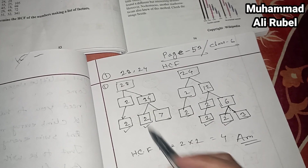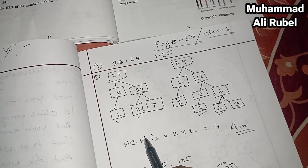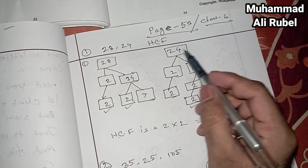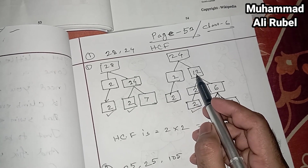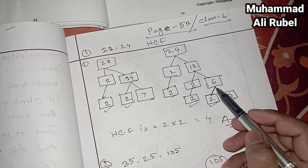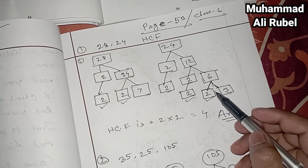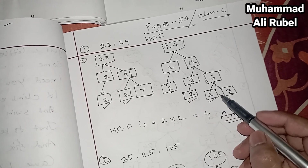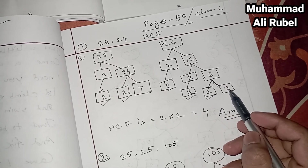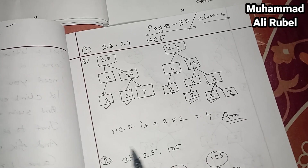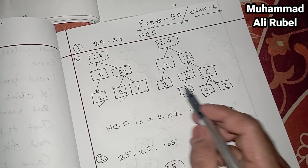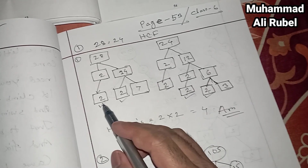For 28: 2 times 14, and 14 is 2 times 7. We make it by a tree — like a factor tree. For 24: 2 times 12, then 12 is 2 times 6, and 6 is 2 times 3. So we find out all of the prime numbers.